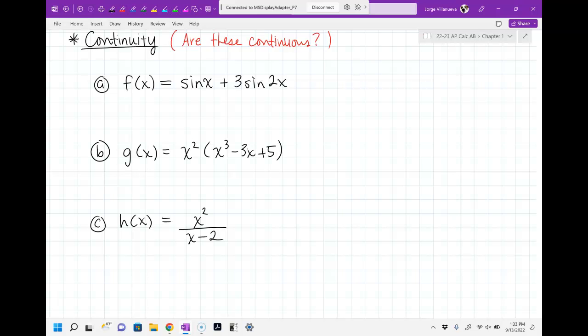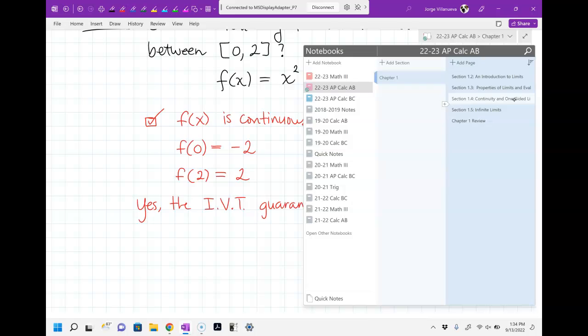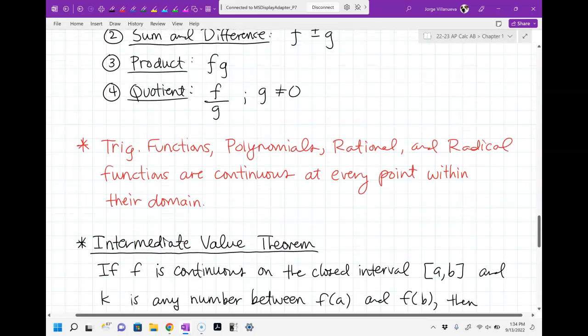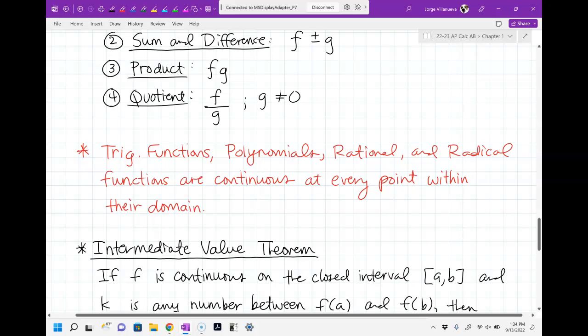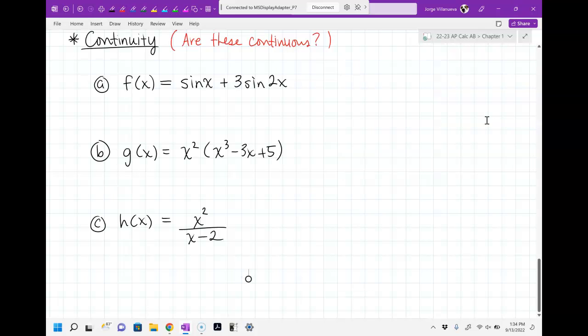So are these continuous? So these are the last questions that you guys have for your quiz. I think on the quiz, I ask you, are they continuous, yes or no. Now, just so you know, there is a note that I put for you guys in section 1.4, I think it was. Functions, right there in red, trig functions, polynomial functions, rationals, and radical functions are continuous at every point within their domain. So, that's what this question is about. What is the domain of sine of x? All reals. What about the domain of sine of 2x? Is that the same? Yeah, it's just a faster period. So, the domain is everything.